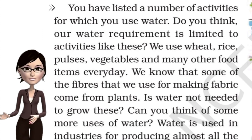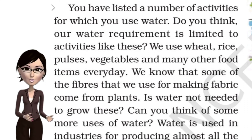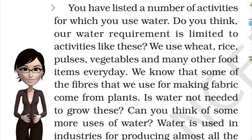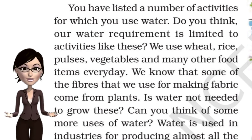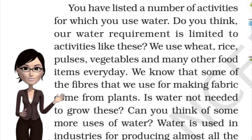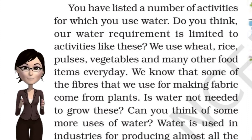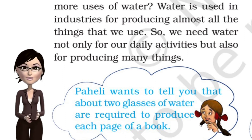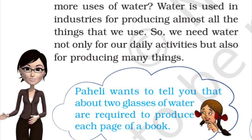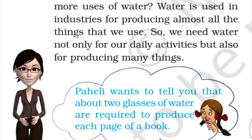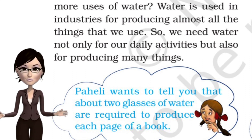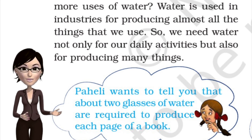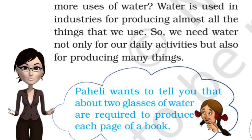You have listed a number of activities for which you use water. But do you think our water requirement is limited to just these daily activities? It is not. Water is used in many places — for the plants we grow, and for crops like rice, wheat, and pulses that we consume daily. Water is also used in industrial areas to produce many different things. So we need water not only for our daily activities but also for producing many things.